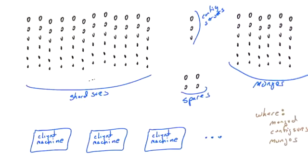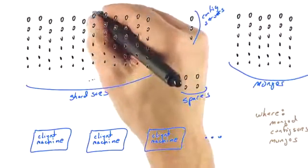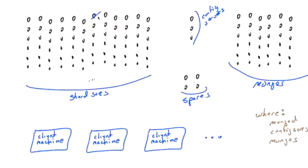Because once you get to a certain cluster size, machines are going to fail pretty often, right? If we have a thousand servers, we may have one, on average, one server per day fails. So it might be wise to have a couple spare servers ready to go. So this would be a possible setup for a very large cluster.